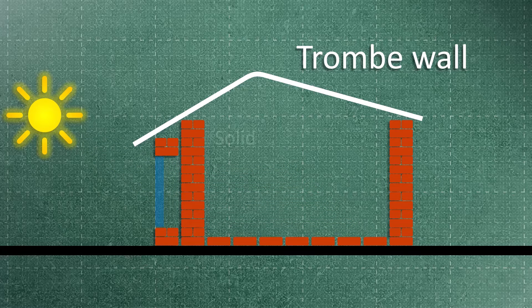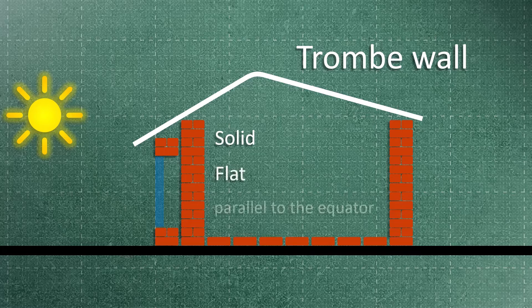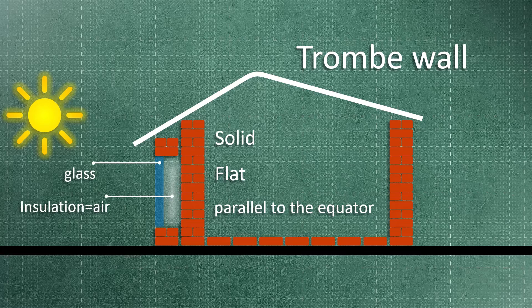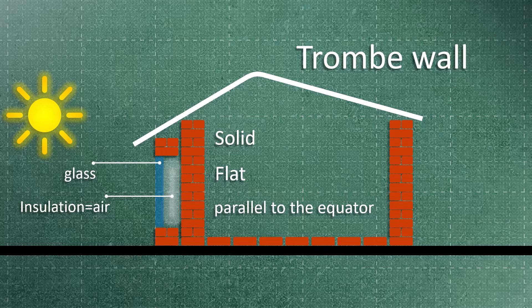Basically, the Trombe wall is a solid and flat wall that is built parallel to the equator. This wall will be covered with glass on one side, and an air layer will be placed between the wall and this glass layer as insulation.